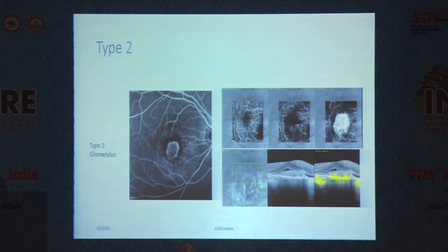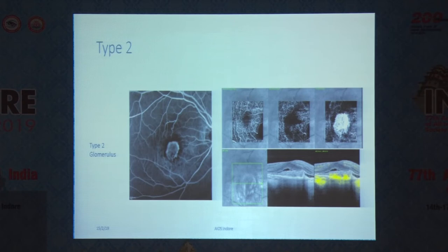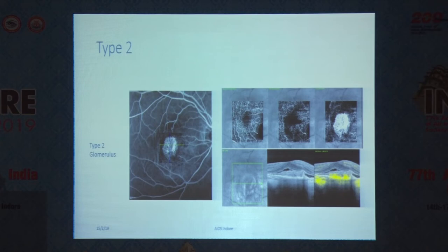Here is another example — this is type 2 CNV, which is called classic CNV in previous terminology. Most of the changes are above the RPE. You can see the fluorescein angiogram on your left, which clearly shows what is easily identifiable as a lacy network of new vessels that leak later on in the frame. The picture on your right at the top shows three layers of the retina identified by the program, and the farthest right shows the network of blood vessels right in the center of the macula — correlating quite well with the fluorescein angiography.